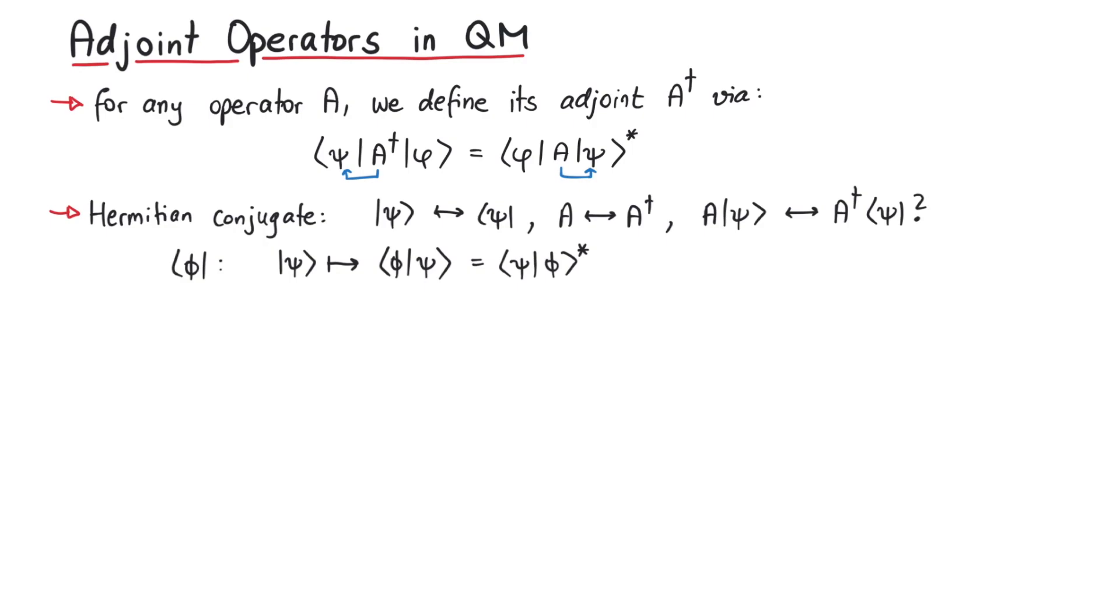Now the question is, what is the bra state of A times a ket? Well, first of all, it will also act as a functional, yielding the inner product, where we can swap the states by adding a complex conjugate. The notation where A is inside the ket state is just a shorthand notation for the operator A acting on psi.